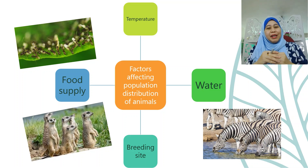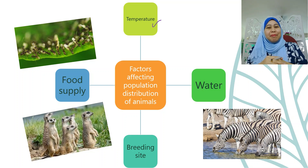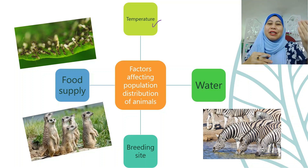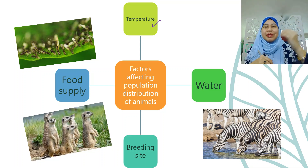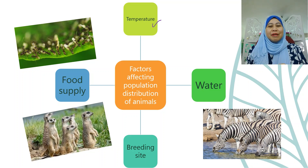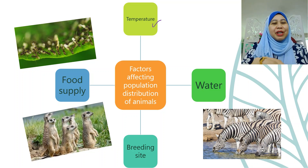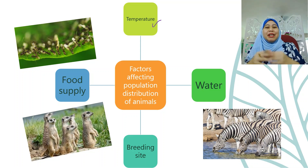Now we look at the factors affecting the population distribution of animals. First is temperature. Normally, areas exposed to high temperature will have fewer animals living there, and extremely cold temperatures will also be less inhabited by certain animals. For example, in places with high temperature, you cannot find animals like snails. Next is food supply. As you can see in the picture of ants — if there is a lot of food, the animals will definitely gather at that place.